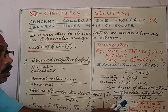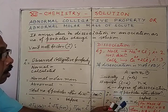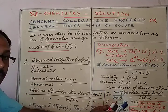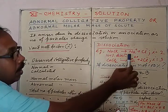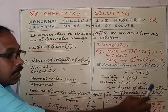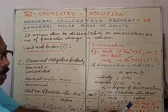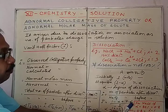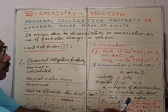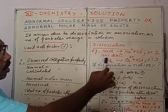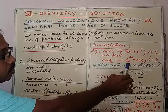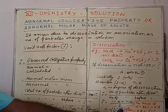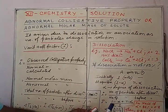For example, the number of particles from sugar does not change when dissolved in solution. But if NaCl is given, it dissociates into Na⁺ and Cl⁻ ions, so the number of particles becomes double the expected value. Likewise, calcium chloride dissociates into three ions. Therefore, the number of particles changes in the solution.